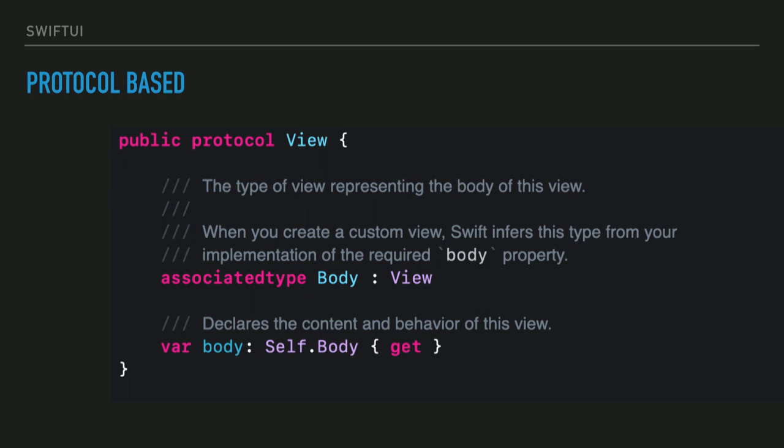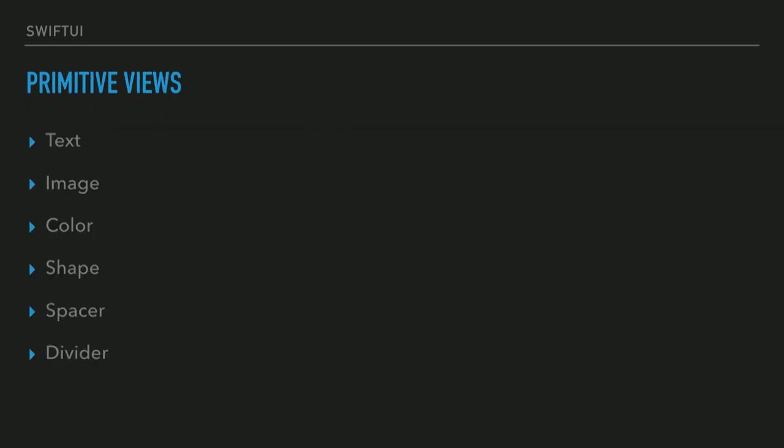Let's take a look at the protocol that backs SwiftUI. It has a single read-only property called body. We implement this as a computed property, and it just returns a view — it's very simple. Here we have a list of primitive views: Text, Image, Color, Shape, Spacer, Divider.